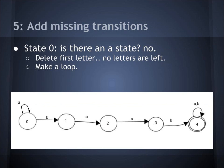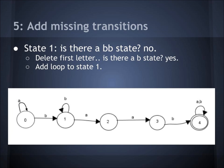Then you add the missing transitions. For state 0, you would add an A. Is there an A state? No. Then you delete the first letter — there are no letters left, so you make a loop on that state. For state 1, you have B, so you would add a B to that. Is there a BB state? No. Then you delete the first letter. Is there a B state? Yes — that state is number 1. So you add a B loop to state 1.